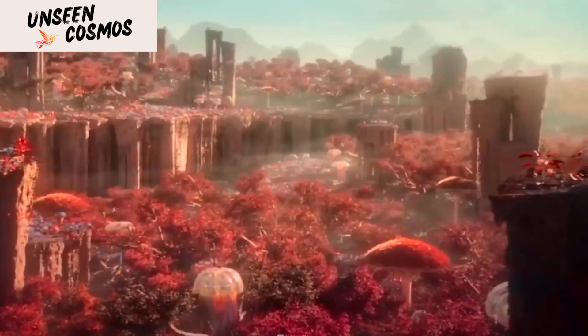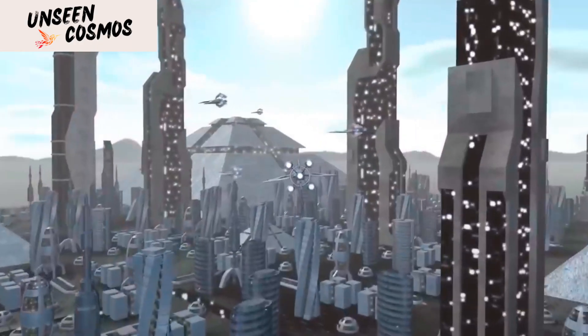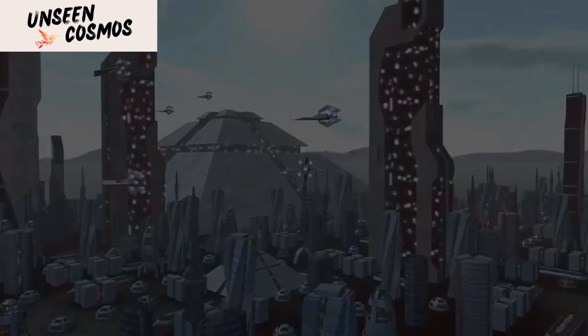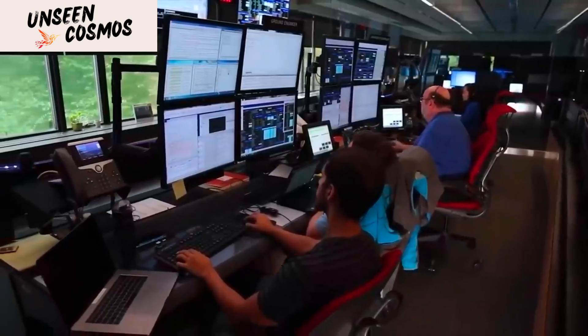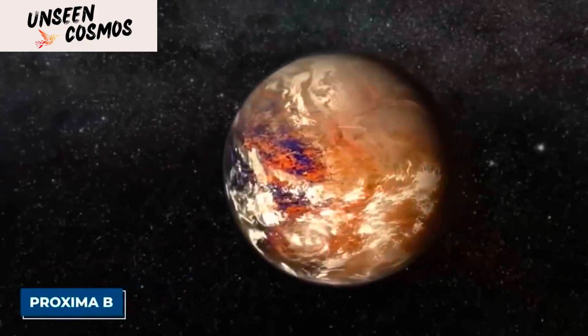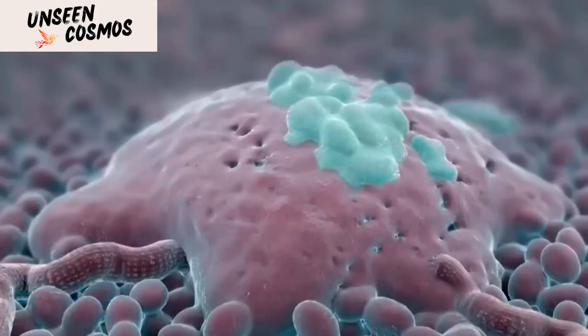One of the key objectives of the James Webb Space Telescope is to study exoplanets, which are planets that orbit stars other than our sun. The telescope will be able to study the atmospheres of exoplanets and look for signs of life, such as the presence of oxygen, water, or methane.